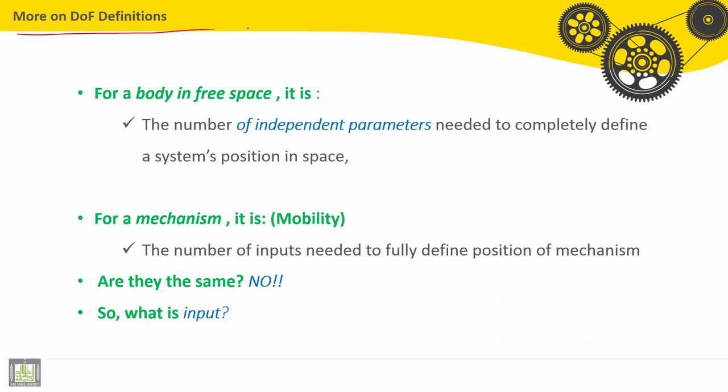More definitions for degree of freedom. For a body in free space, it is the number of independent parameters needed to completely define a system's position in space. For a mechanism, it is called mobility. It is the number of inputs needed to fully define position of mechanism. Are they the same? No, definitely. So what is input?